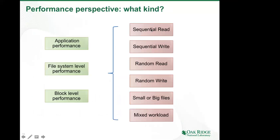We have a question from Evan Felix about the hybrid approach between N-to-1 and N-to-N. If you have 18,000 processes and want to write using only 2,000 of them at a time to avoid maxing out the system, how do you work that out? That will be addressed at the end of the talk.